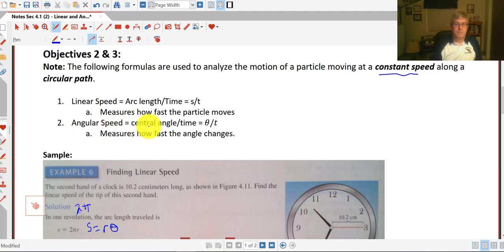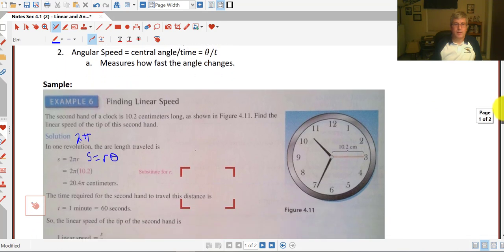The angular speed, that formula or that calculation is the angle theta, the central angle divided by time. And that measures how fast the angle changes. So slightly different concepts there.